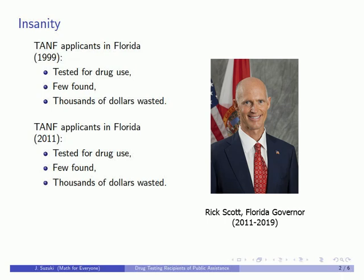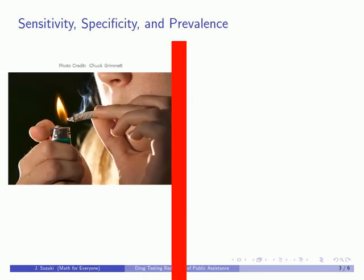Insanity is doing the same thing over and over again, thinking that you'll get a different result. But suppose we agree that denying public assistance to addicts is a good idea. Should we trust the results of a drug test?